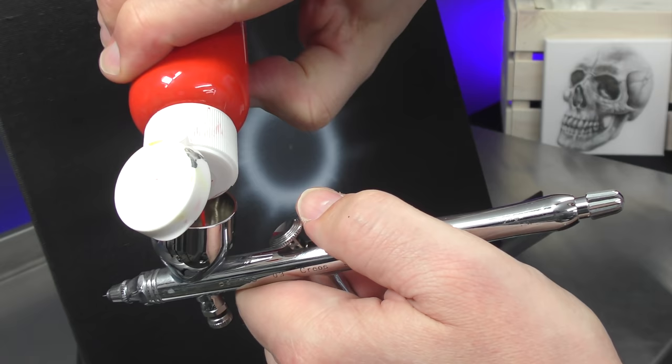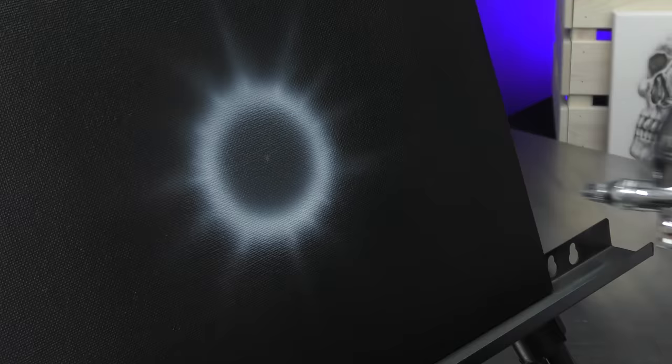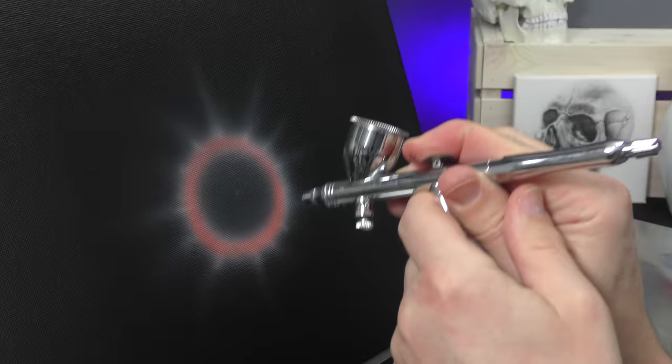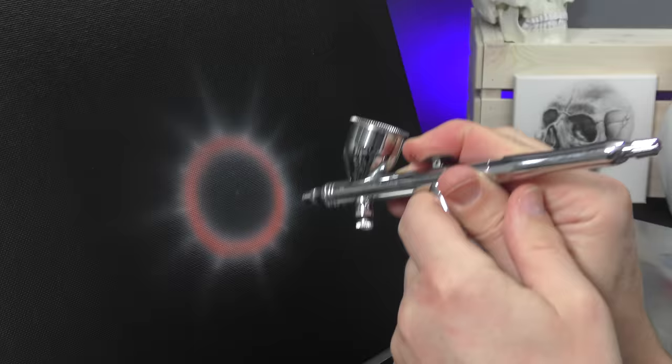Now I'm going to add in some transparent orange. This is just orange Trident mixed with transparent base and some reducer. And using that orange, I'm going to dust around the eclipse and tone that white that I've just laid down. Also go over some of these bits.